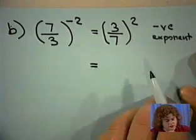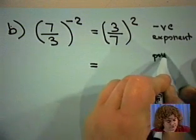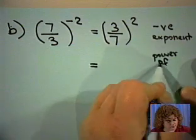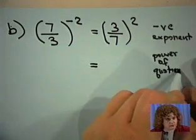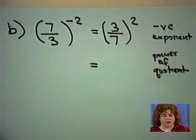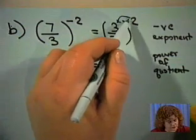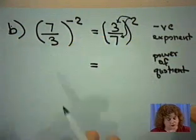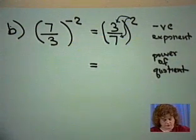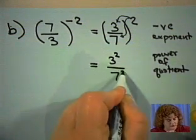Let's now use the power of a quotient rule and attach that 2 to everything inside. Different colored pens or pencils are very helpful and draw yourself arrows so that you don't forget anything. And we'll have 3 squared over 7 squared.